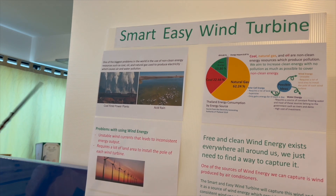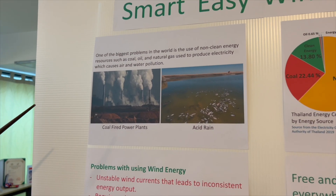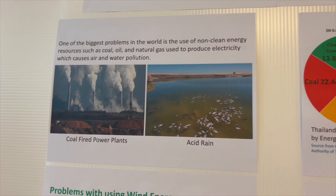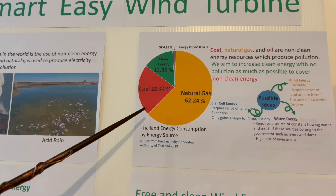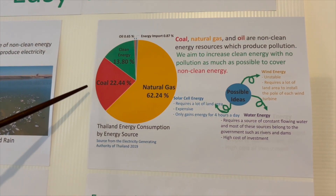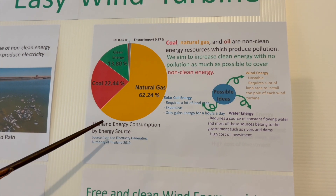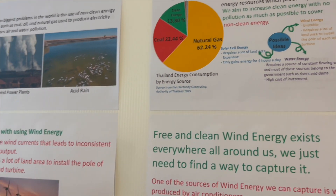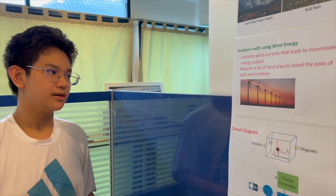Now, one of the biggest problems in the world is the use of non-clean energy resources, which can cause several types of pollution, including air and water pollution. As you can see here from this chart, most of the energy consumed in the world is from non-renewable resources and non-clean energy.